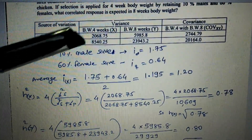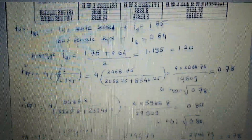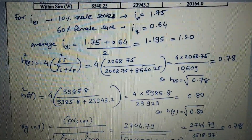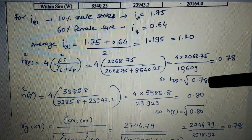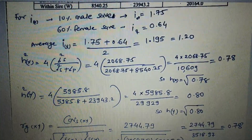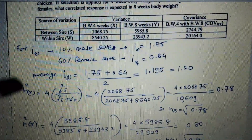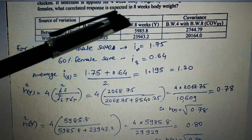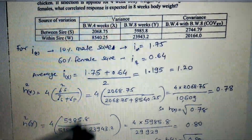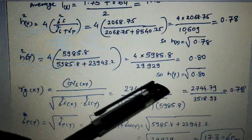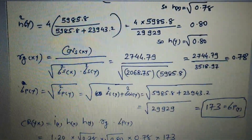Solving that gives h²_x = 0.78, so the square root of heritability for X is √0.78. Likewise for the Y trait (eight-week body weight): using 4 × Variance_Sy divided by (Variance_Sy + Variance_Wy), we get h²_y = 0.80, so square root of heritability for Y is √0.80.